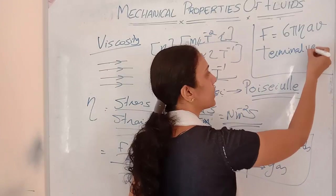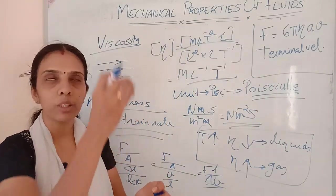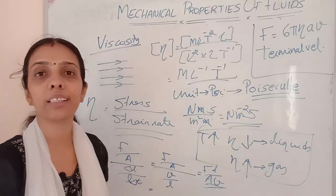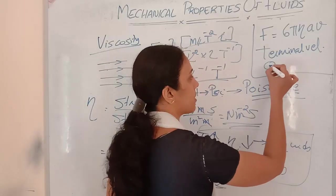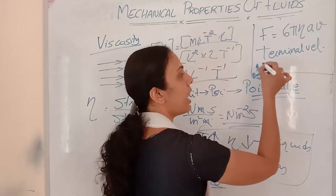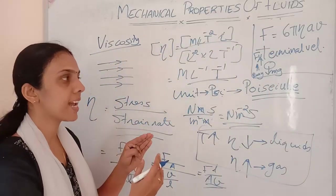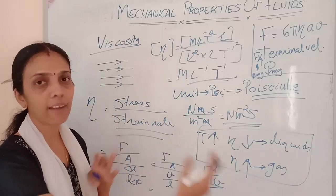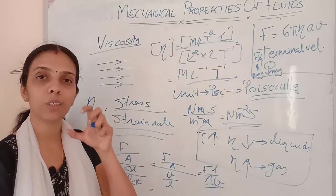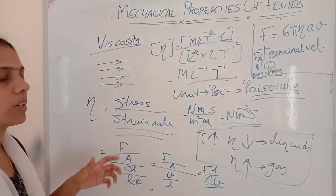Terminal velocity is the maximum velocity an object attains when it is in free fall through a fluid. The velocity increases from zero until the forces balance: when viscous drag force plus buoyant force equals gravitational force (mg), the object reaches terminal velocity.